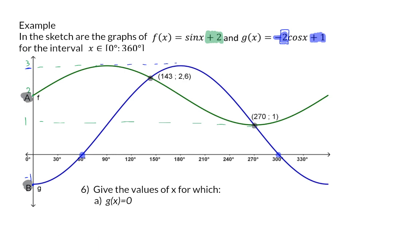Question 6: Give the values of x for which G(x) is equal to 0. We already know that G(x) means the y-value, and in this case they should be 0, which means we need to get the x-intercepts. From the graph, we can see that the x-intercepts for the blue graph are at 60 and at 300, so this will be x is equal to 60 or x is equal to 300 degrees.